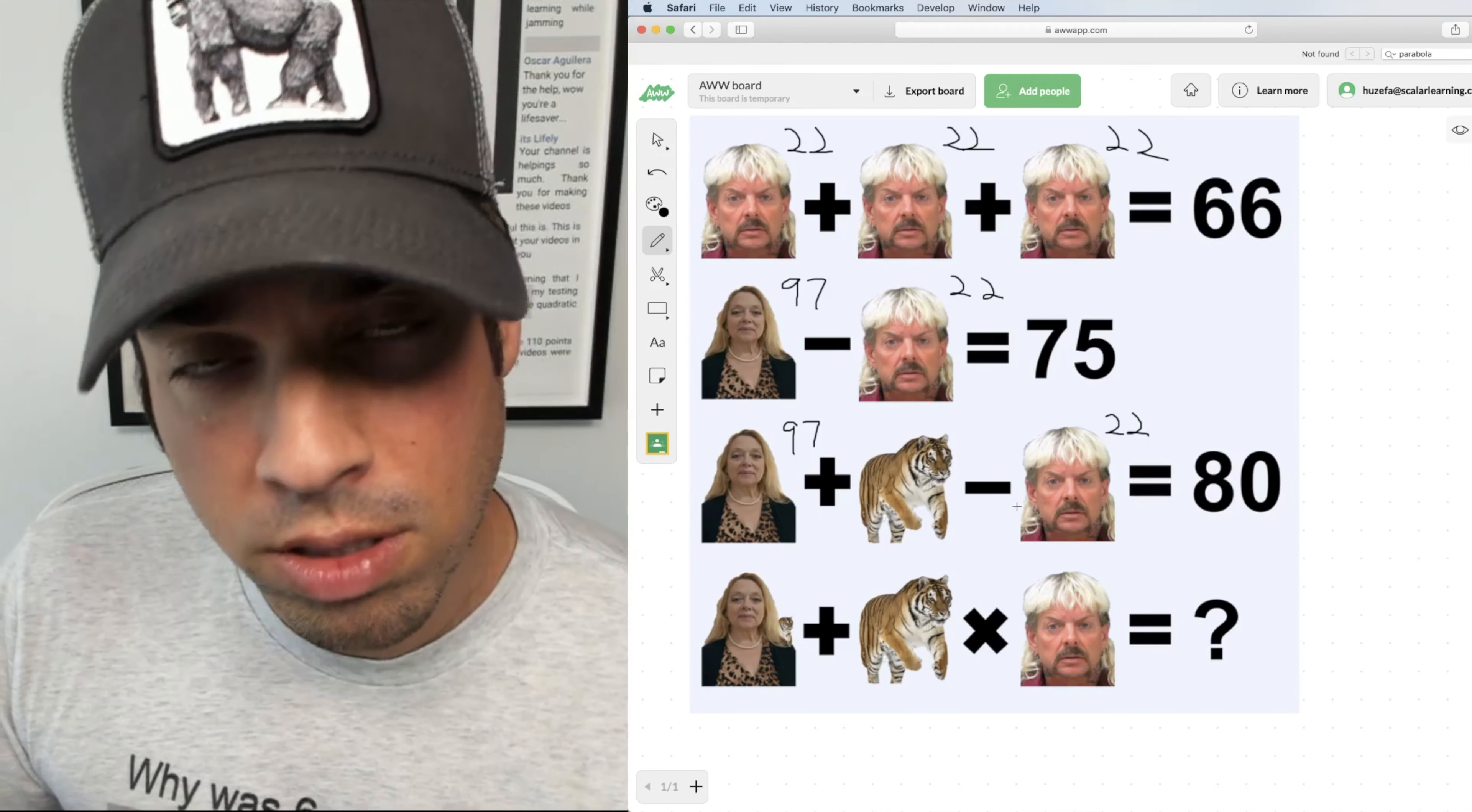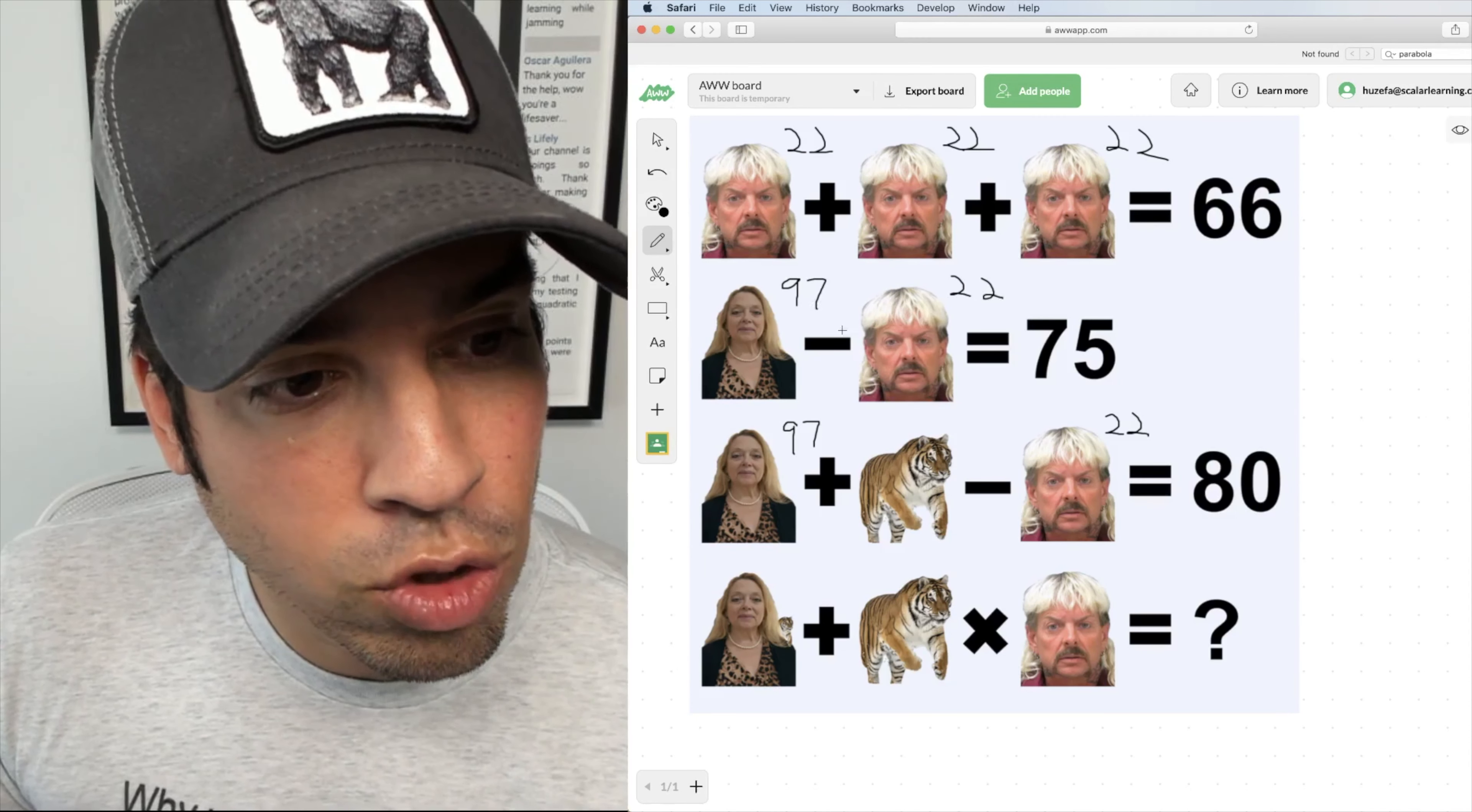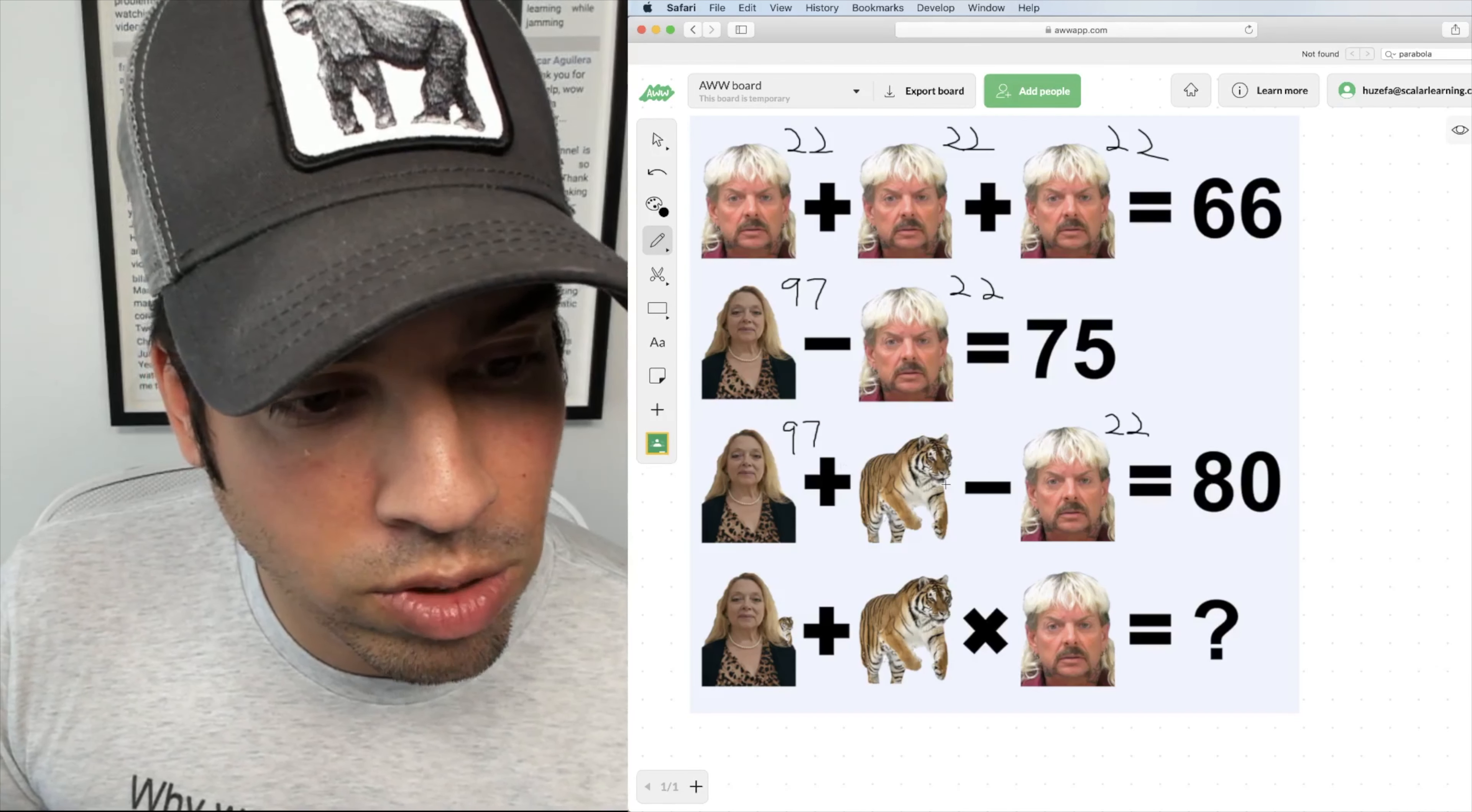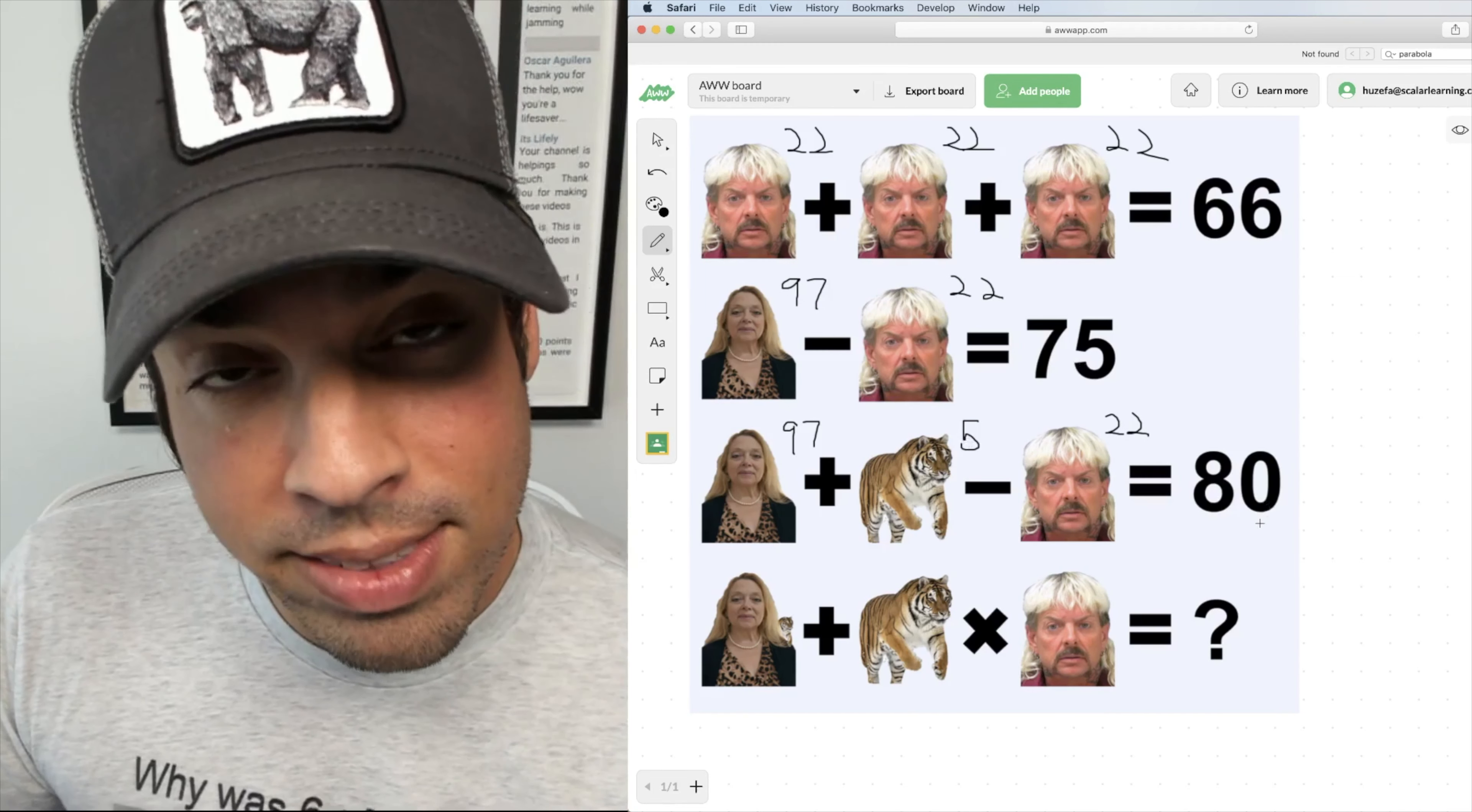So again we can do our typical variable isolation, kind of add 22, subtract 97, or I can look and say hey wait a minute, 97 minus 22 up here is 75. 97 minus 22 is 75 down here too, but we're adding that tiger, so that tiger must be a value of 5 because 5 plus 75 takes us to 80.